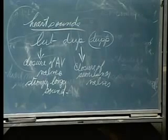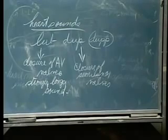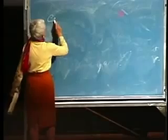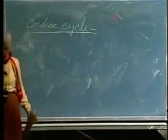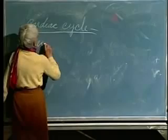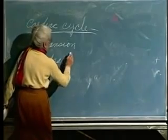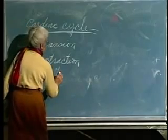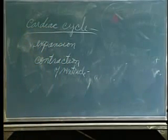Both the pulmonary trunk and the ascending aorta have three semilunar valves — each one needs them. Now, a word about heart murmurs. How many of you have a heart murmur? A heart murmur means incomplete closure of an AV valve.